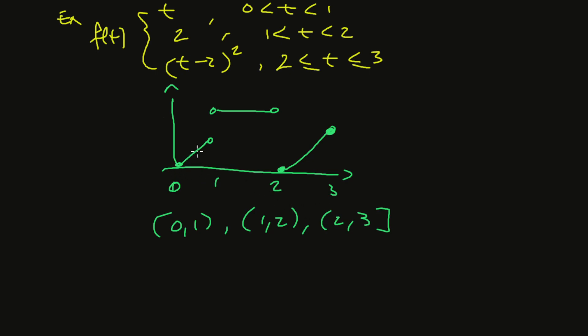The points of discontinuity are at t equals 0, 1, and 2, and the function has jump discontinuities there. But the one-sided limits exist as finite numbers. In particular, for t equal 1, the left-hand limit equals 1 and the right-hand limit is 2.